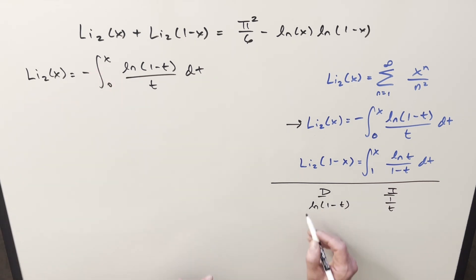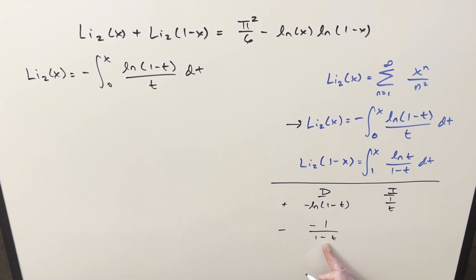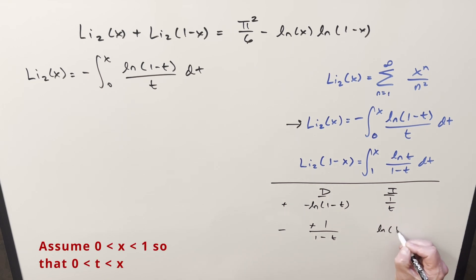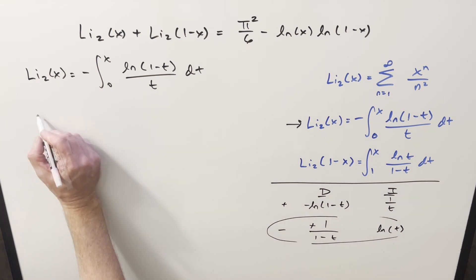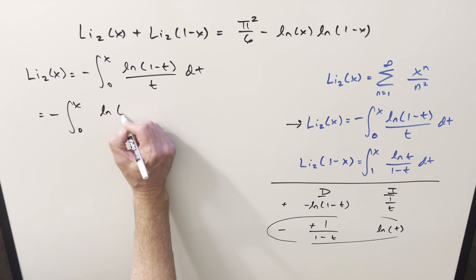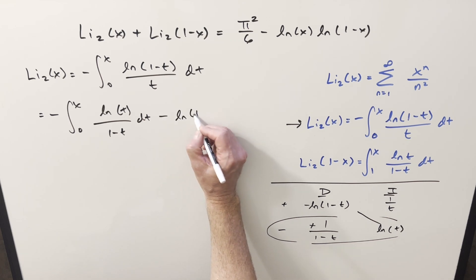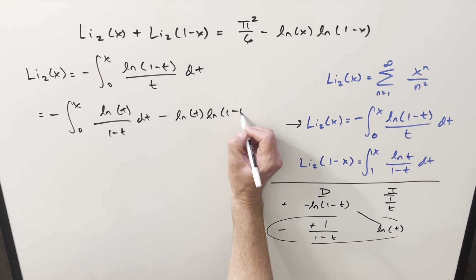Let's bring the minus sign inside just so we can keep track of it. When we differentiate this piece, we get minus 1 over (1 − t), but then chain rule, a minus sign pops out — that becomes a plus. Integrating this, we're just going to have ln(t). So then we're going to have an integral here at the bottom: minus integral from 0 to x of ln(t) over (1 − t). And we capture the diagonal term: minus ln(t) · ln(1 − t).